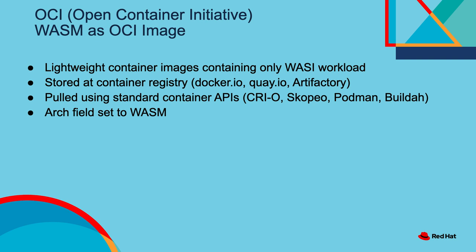We have applications being built, and we have a runtime that we can run them on. We want to apply them to cloud native, distributing these applications the same way we distribute all applications. We want them to be lightweight container images following the OCI standard, stored at container registries like docker.io, quay.io, Artifactory — the thousands of different container registries that are out there. We want them pulled by standard tools using the standard APIs like CRI-O, Skopeo, Podman, Docker, Containerd, Buildah — whatever technology you want to use. But we have to identify them. Most OCI applications are identified by operating system and architecture, and the architecture here is WASM. There's going to be an identification in these images indicating they're the WASM architecture.